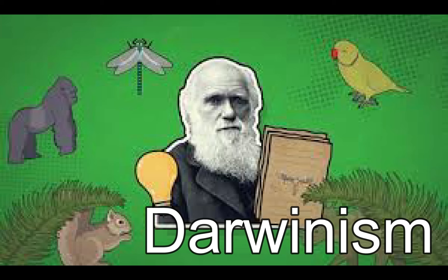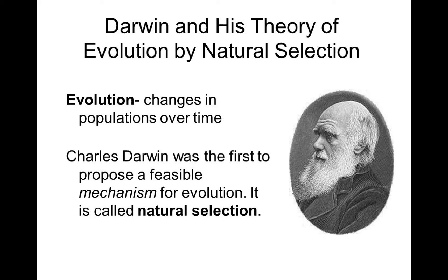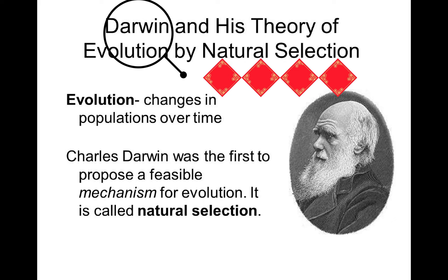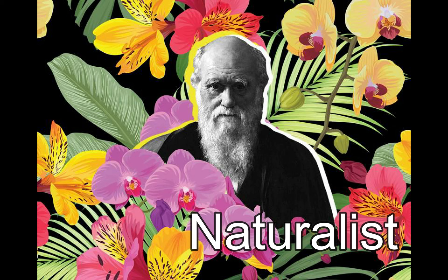If we talk about Darwinism, what is Darwinism? It is a theory that explains the evolution of new species through natural selection, and it is named after Charles Darwin.